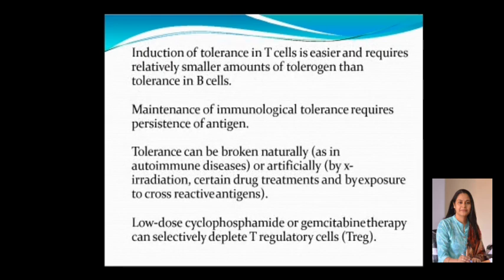Induction of tolerance in T cells is quite easier and requires a relatively smaller amount of tolerogen than tolerance in B cells. The maintenance of immunological tolerance requires persistence of the antigen. Tolerance can be broken naturally or artificially. If it is broken naturally, it results in the formation of autoimmune diseases. If done artificially, it can be achieved using irradiation or certain drug treatments, and it can also happen by exposure to cross-reactive antigens.